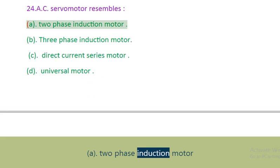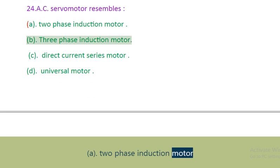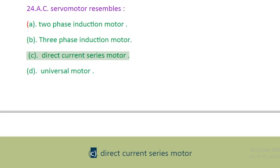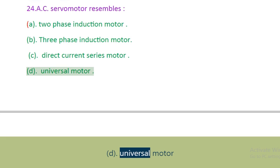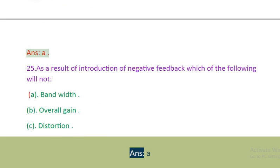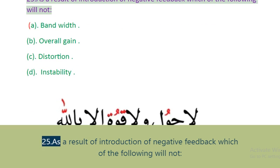Question 24: AC servomotor resembles. A. Two phase induction motor. B. Three phase induction motor. C. Direct current series motor. D. Universal motor. Answer: A.